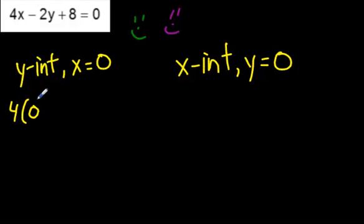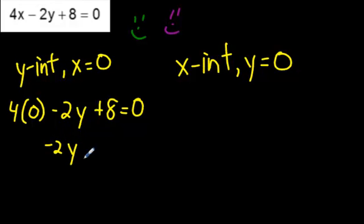So I'll write it out just to make it clear. 4, and then in brackets, 0 instead of x. And write everything else just as you see it. Minus 2y plus 8 equals 0. Now, 4 times 0 is just 0. So we're left with negative 2y plus 8 equals 0.